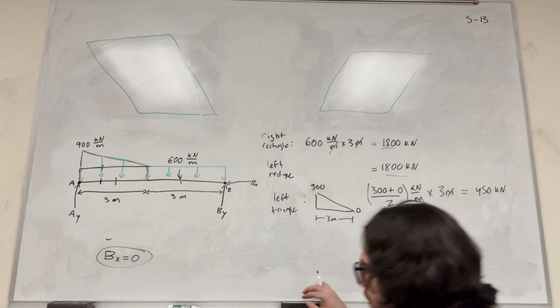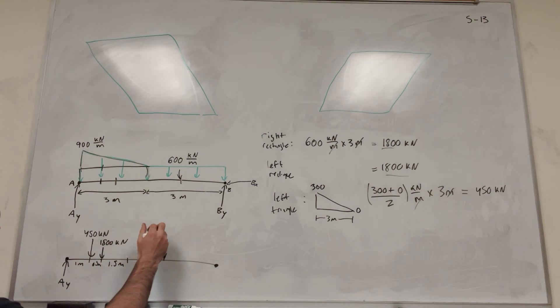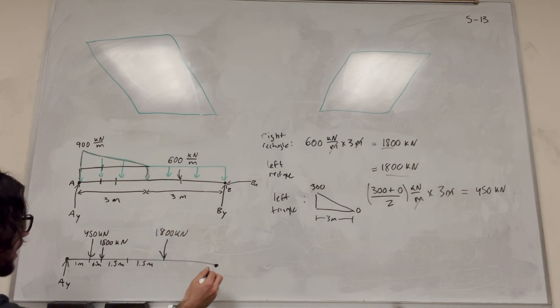Alright, so now with these three forces, we can go ahead and redraw our force product diagram into something a little bit more simple. So I'm just going to redraw it right under here. This is B, this is A. We got A_y here. And we said that this triangle is going to act a meter over, so it's one meter, and it's going to act here with the force that we found, 450 kilonewtons. So then this next one, this rectangle, is going to act 1.5 meters over, so this distance is 1.5 meters. This is going to be 1,800 kilonewtons. Then it's going to be halfway there, which is 3 meters, and our next force is going to act at 4.5 meters. This next one acts here. This is another 1,800 kilonewtons. And then we have A and B_y here.